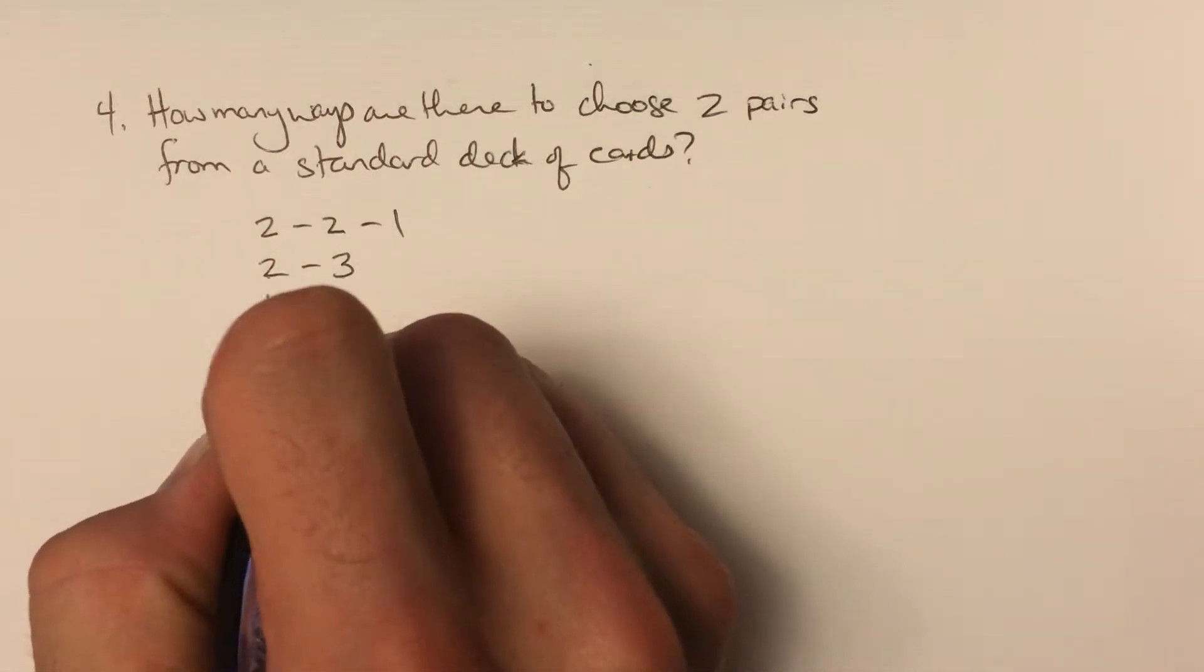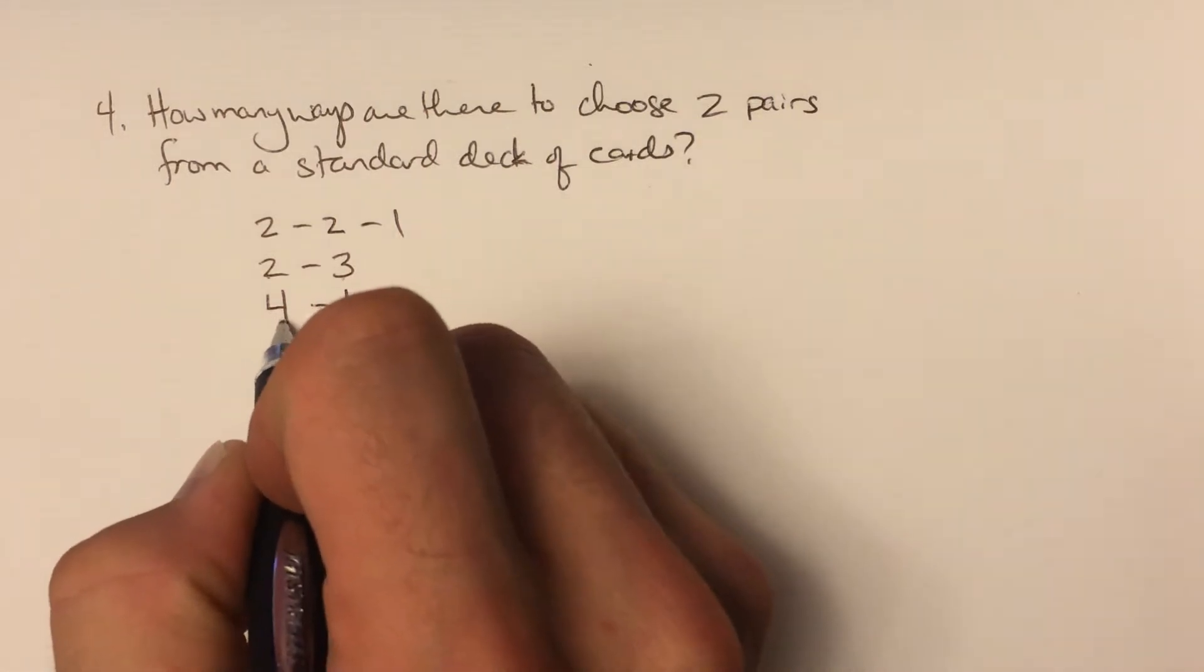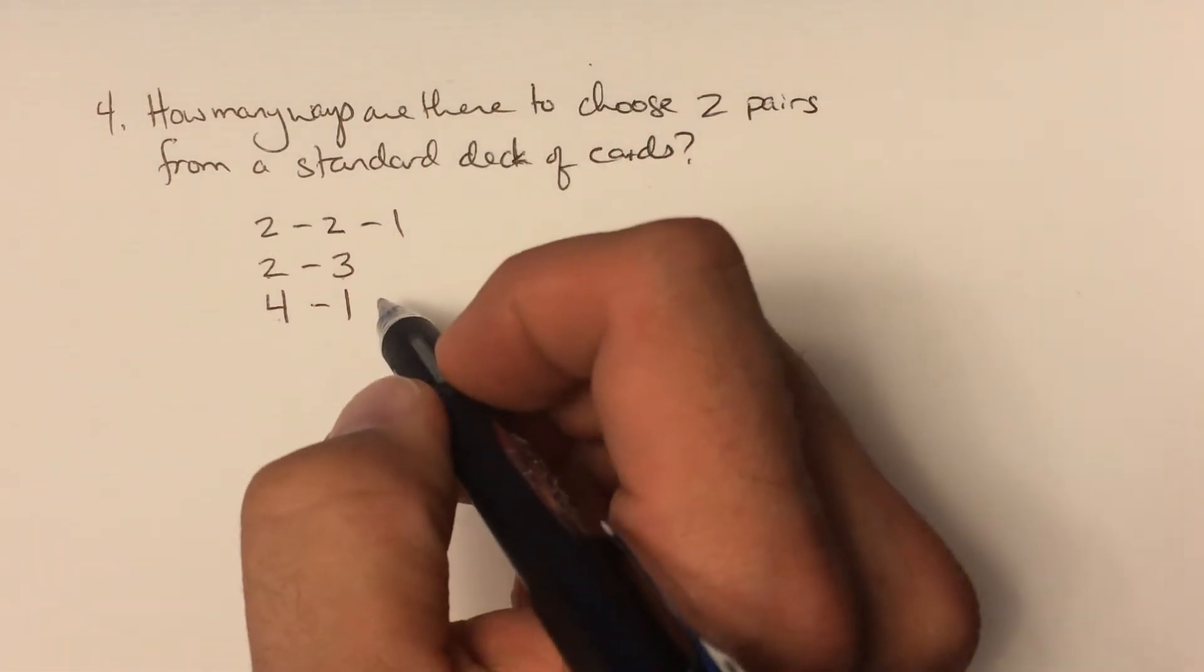Or you could have four of a kind and then one other card. This is still two pairs.